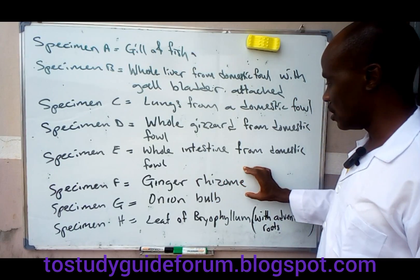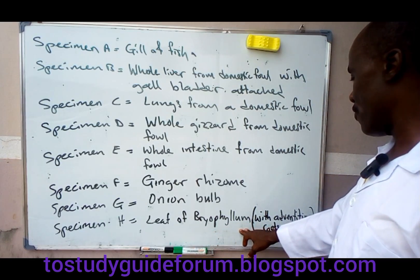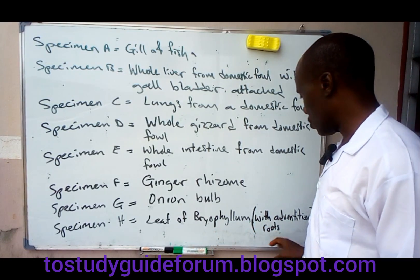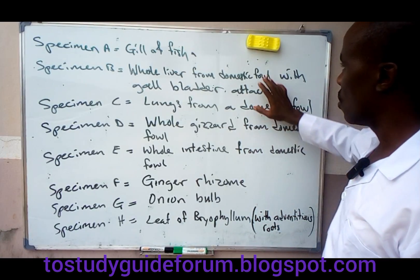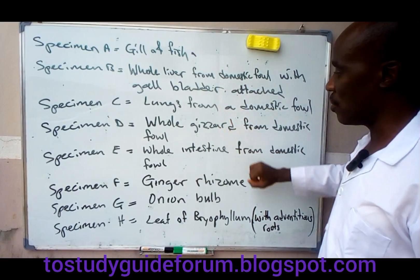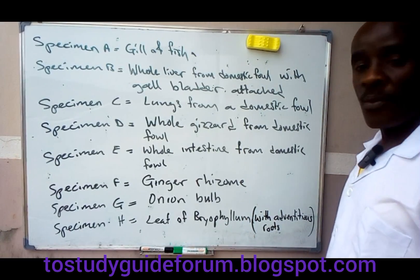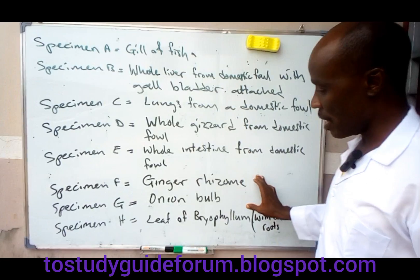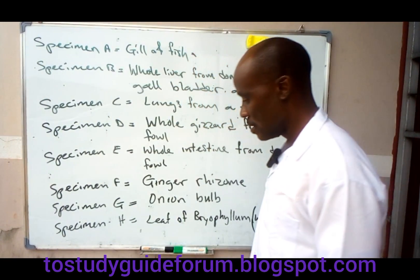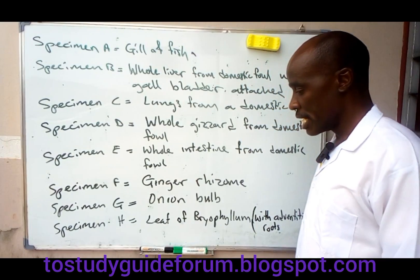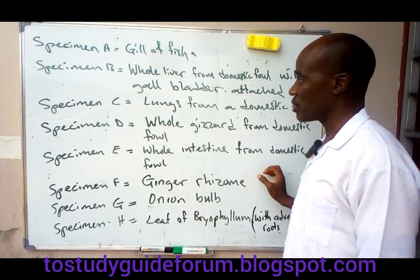Moving down, we have ginger, the onion bulb, and the sleeve of Bryophyllum. These are all plants. So the whole upper section — Specimens A through E — has to do with animals, while this other end — the ginger, onion, and Bryophyllum — has to do with plants.